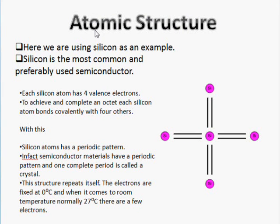Here is the atomic structure of silicon. Each silicon atom has four valence electrons. To achieve and complete an octet, each silicon atom bonds covalently with four other silicon atoms.